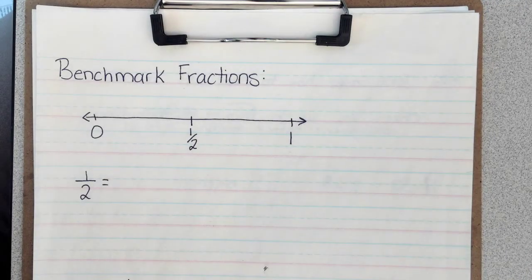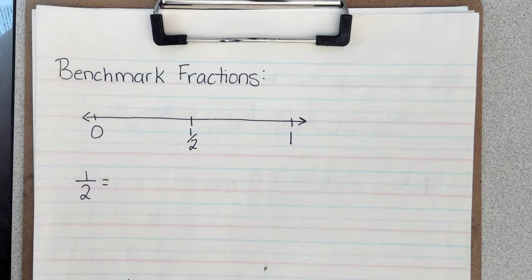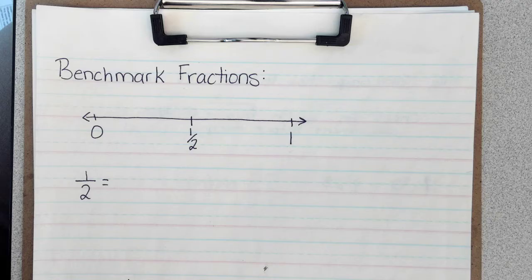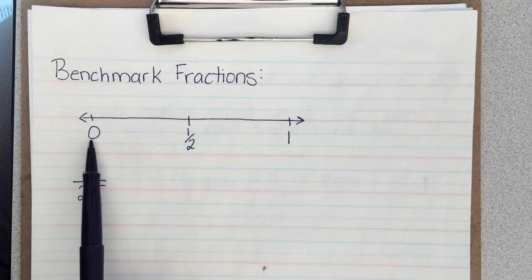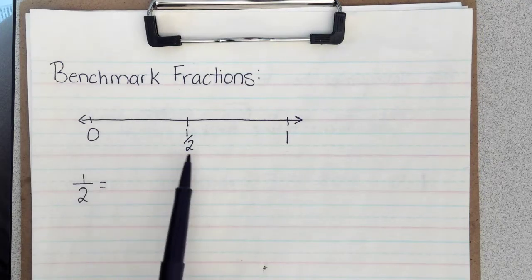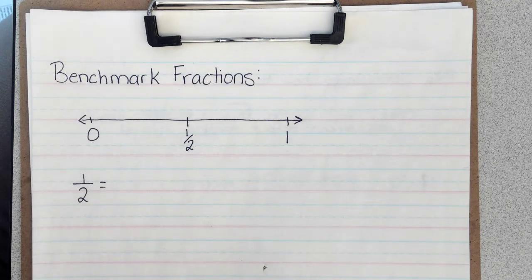In this video we're going to talk about how to use benchmark fractions in order to compare two fractions with unlike denominators. So first we need to think about what benchmark fractions are. Benchmark fractions are numbers like 0, 1 half, or 1 whole.